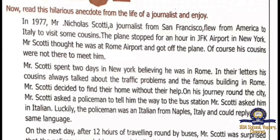In their letters, his cousins always talked about the traffic problems and famous buildings in Rome. Mr. Scottie decided to find their home without their help. On his journey around the city, he asked a policeman for directions to the bus station — in Italian. Luckily the policeman was an Italian from Naples and could reply in the same language. On the next day, after 12 hours of traveling around by buses, Mr. Scottie was surprised that the policeman and drivers spoke in English. A policeman tried to tell him he was in New York, but Mr. Scottie didn't believe it and even got angry.